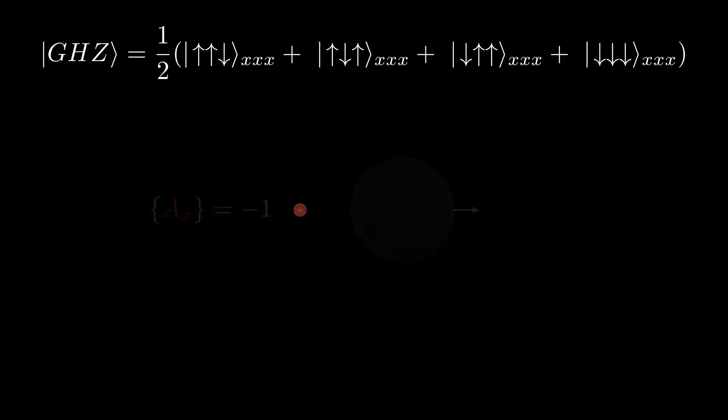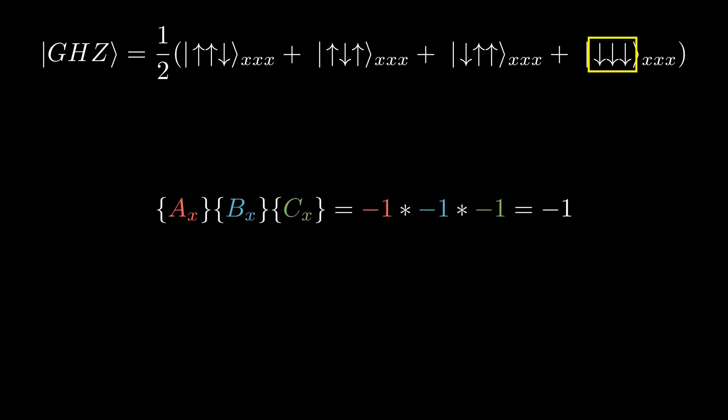And note that for all four of these possible outcomes, the product of AX times BX times CX must always be negative one. This was our first equation.